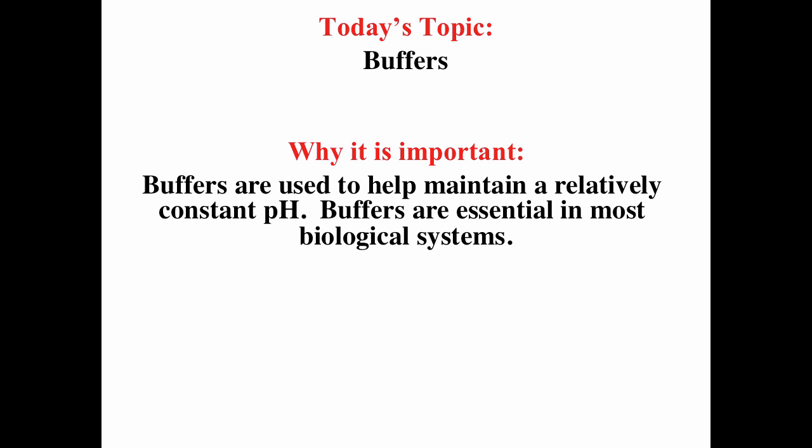This video is on buffers. Buffers are used to help maintain a relatively constant pH. Buffers are important for biological systems because they help maintain a relatively constant pH. Protein secondary structure actually depends on the pH of a solution, so it's important to maintain a relatively constant pH.